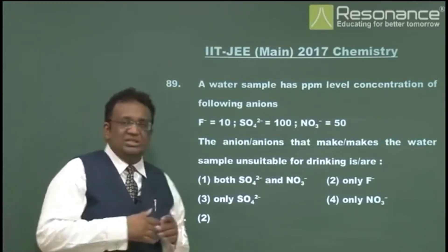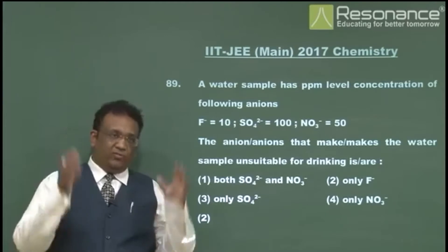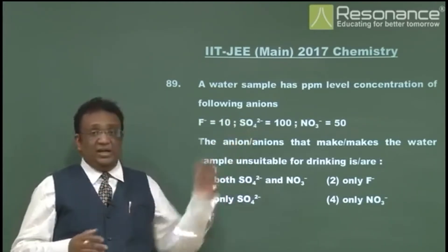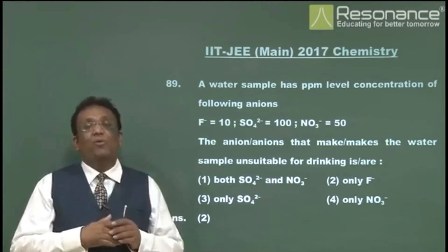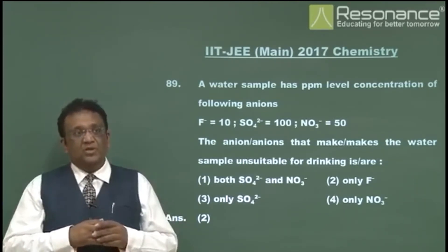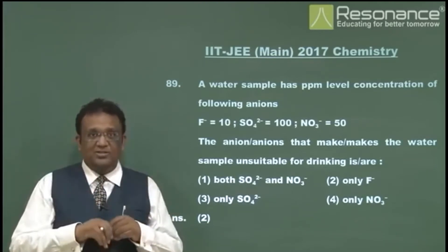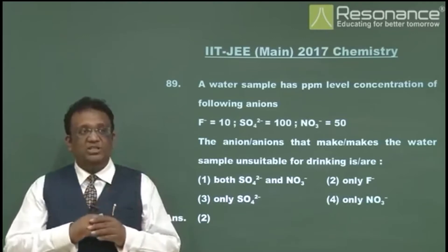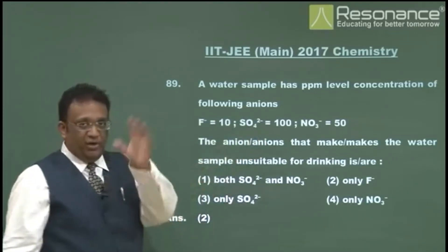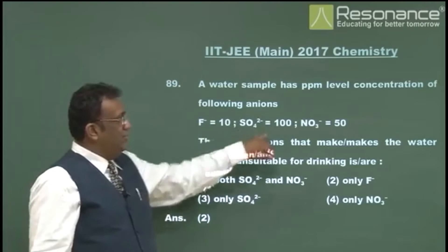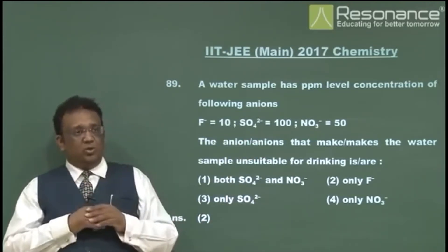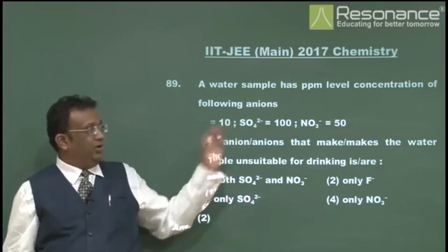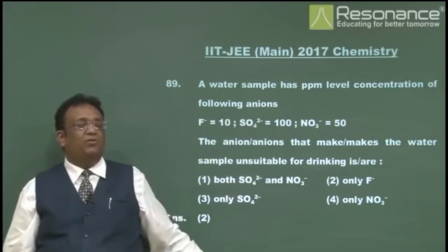This is from 11th standard environmental chemistry — straightforward factual recall. Sulfate is consumed medicinally as Epsom salt and its safe limit is around 500 ppm, so 100 ppm is fine. Nitrate's limit is approximately 50 ppm, so 50 ppm is at the borderline but acceptable.